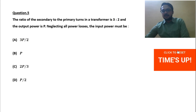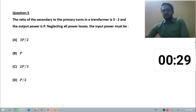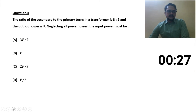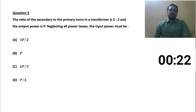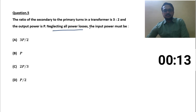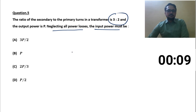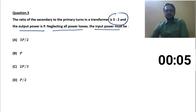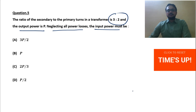Next question is question number five — a very easy, theory-based question and the last question for today. The ratio of secondary to primary turns in a transformer is 3 to 2, and the output power is P. Neglecting all the power losses, find the input power. Time's up.